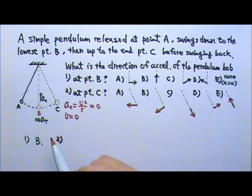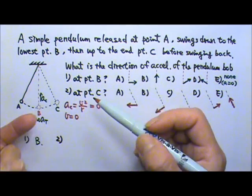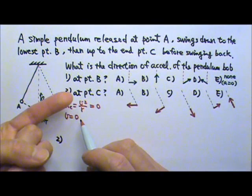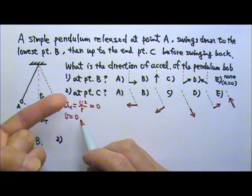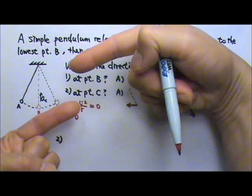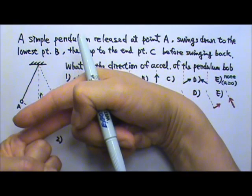But there is tangential acceleration. Because when the object gets to C, if it's on its way up, it is slowing down. That means the acceleration is in the opposite direction. The acceleration will be down that way tangent to the path.